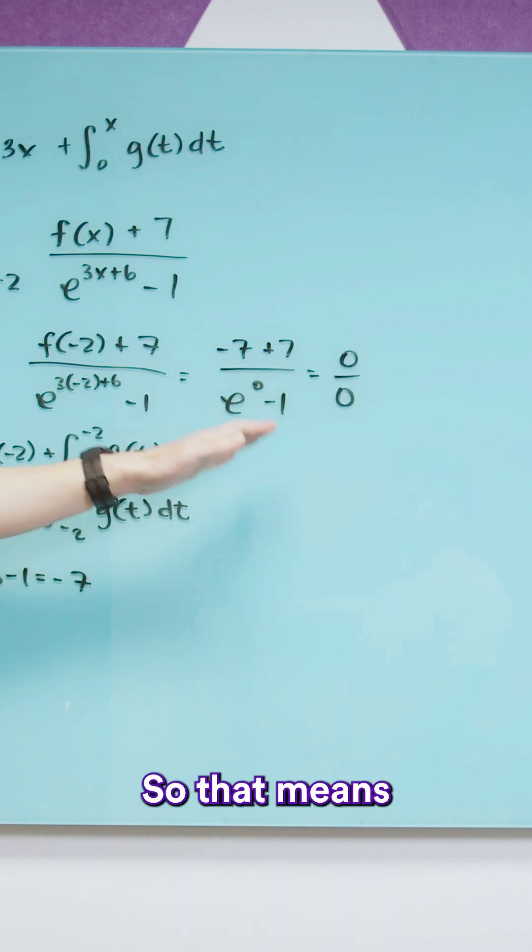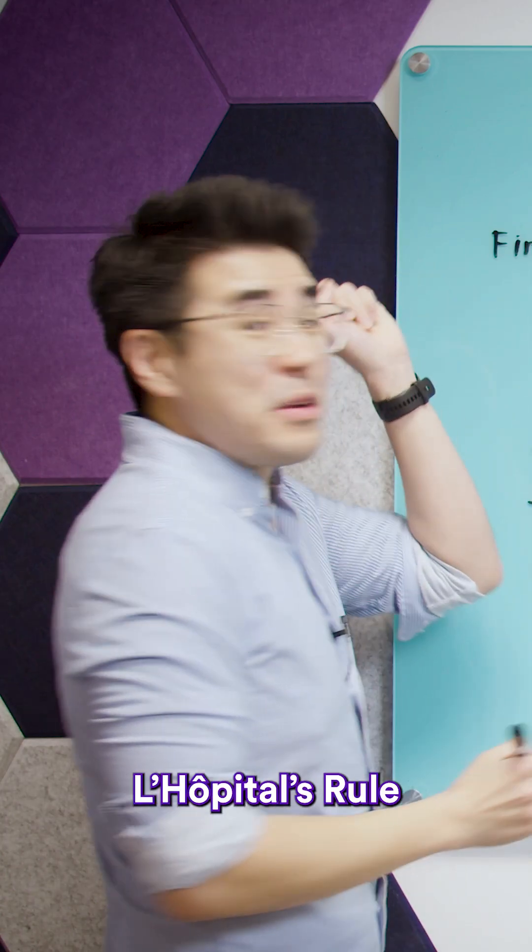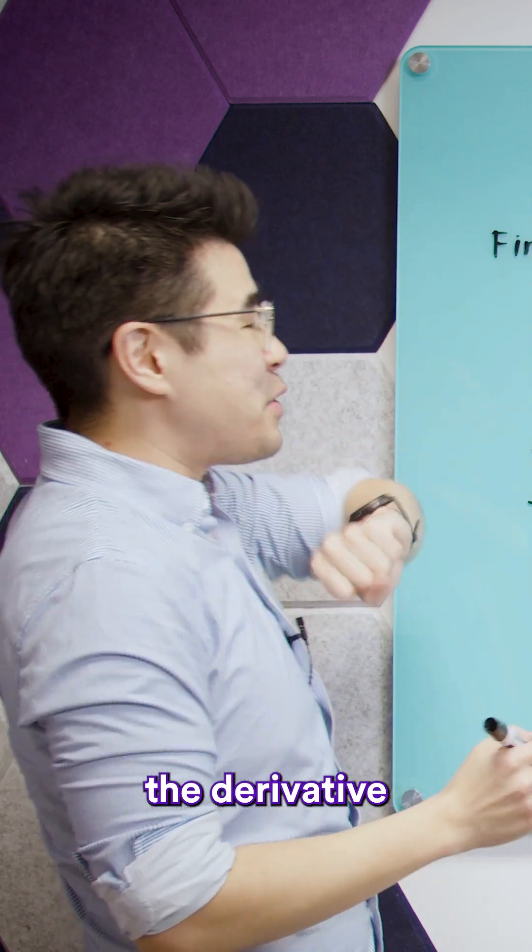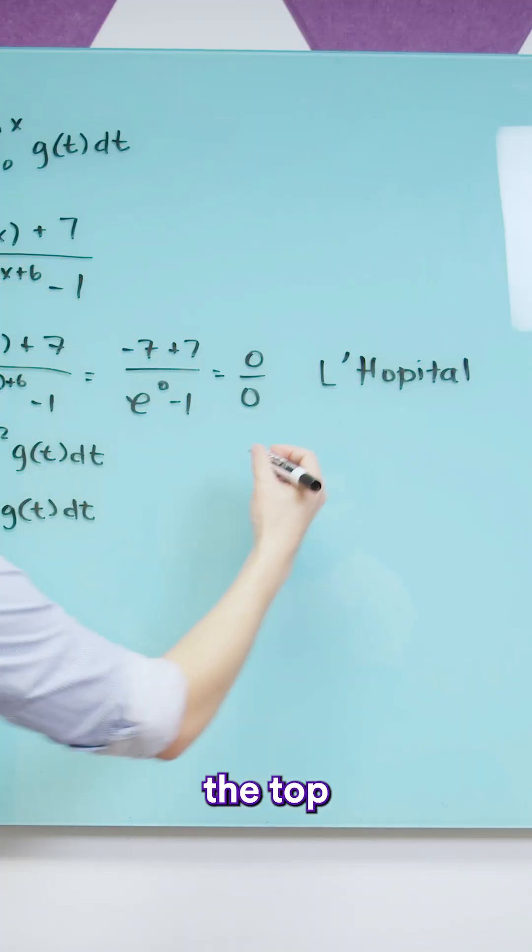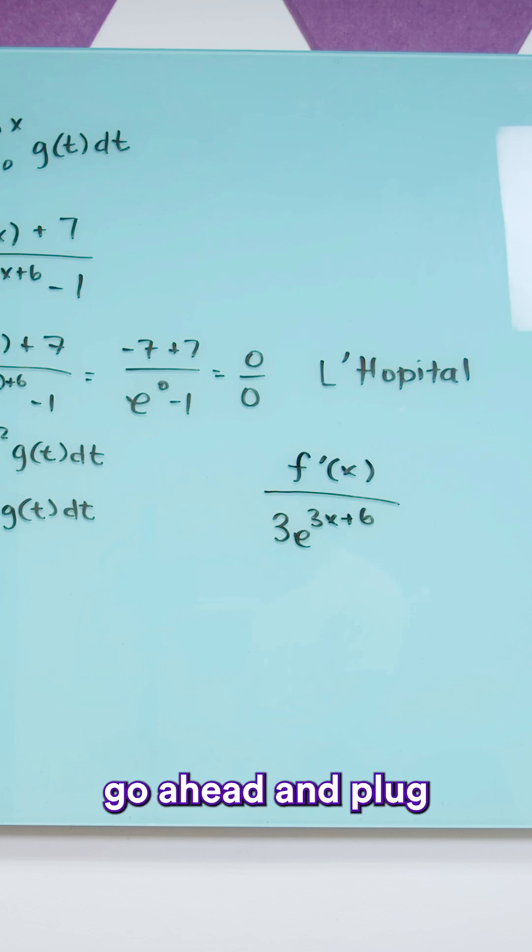I got 0 over 0 so that means I'm going to use L'Hopital's rule. So L'Hopital's rule means that I'm going to take the derivative of the top and the bottom. So the derivative of the top is just going to be, so then I'm just going to go ahead and plug in negative 2 into the derivative of the top and the bottom.